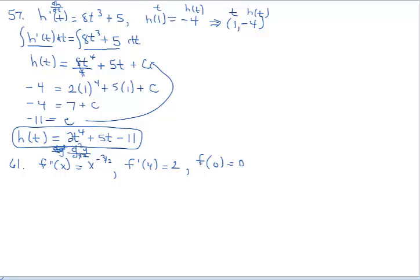We've got the second derivative, and notice we have a second initial condition. We need a second initial condition because I'm going to integrate not once but twice. With the first integration I get back to y prime or f prime, and I need to find the constant of integration in that step before integrating a second time. Noting the notation: we could write this as ordered pair (4, 2), but with the prime notation it tells us that (4, 2) belongs on the derivative graph. The other condition represents the ordered pair (0, 0), where x is 0 and f of x is 0.